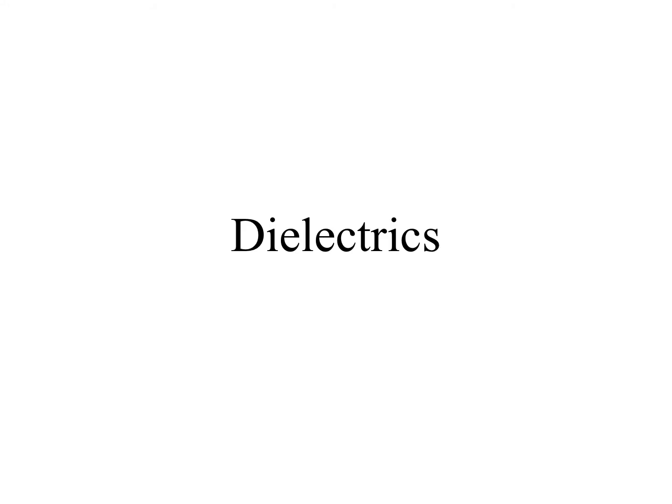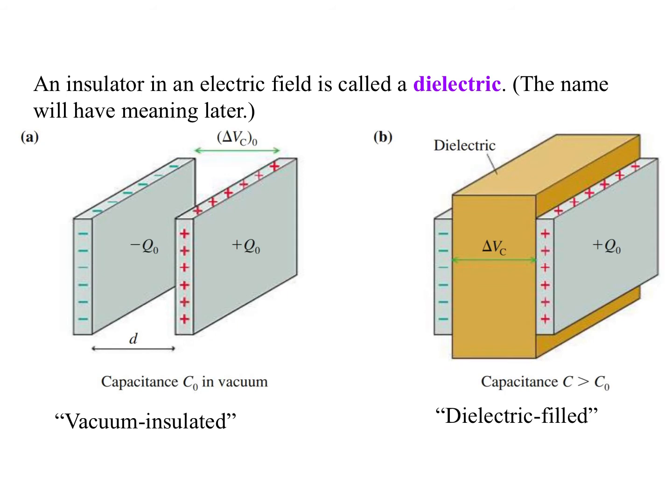Today's topic is something called dielectrics, a weird word that we'll explain in a bit. An insulator in an electric field is called a dielectric. This name will have a better meaning later, but it really comes down to di meaning two, electric.